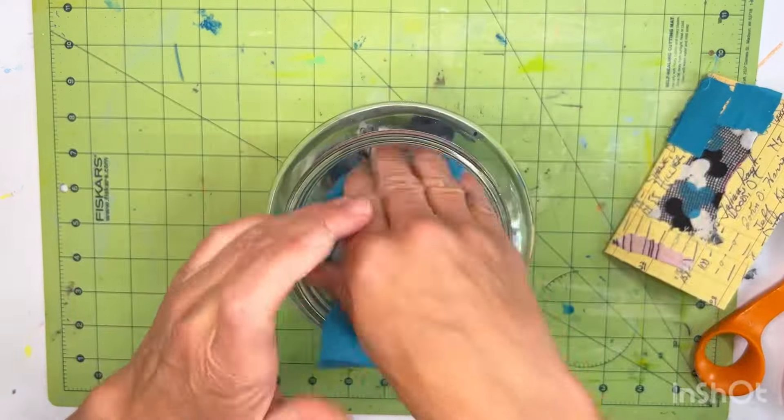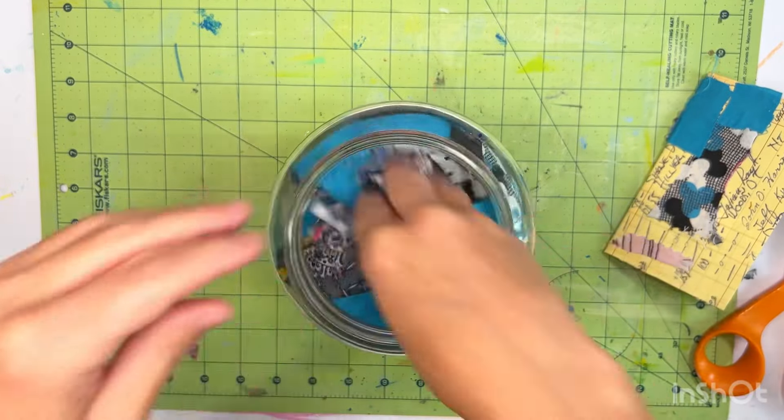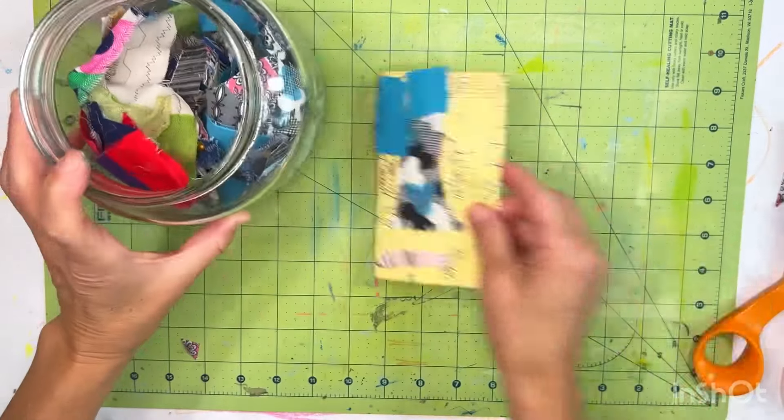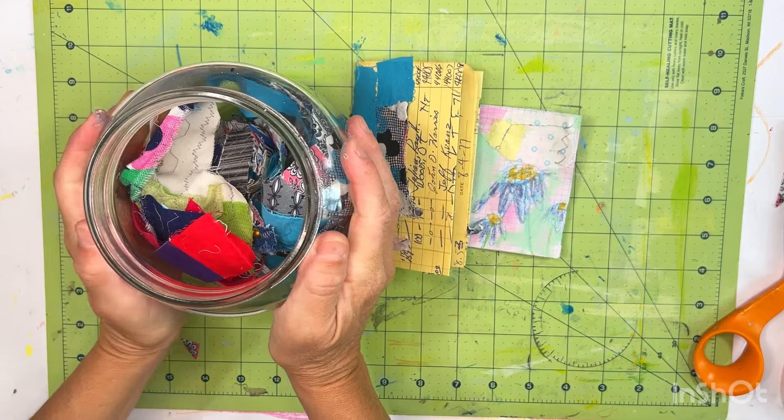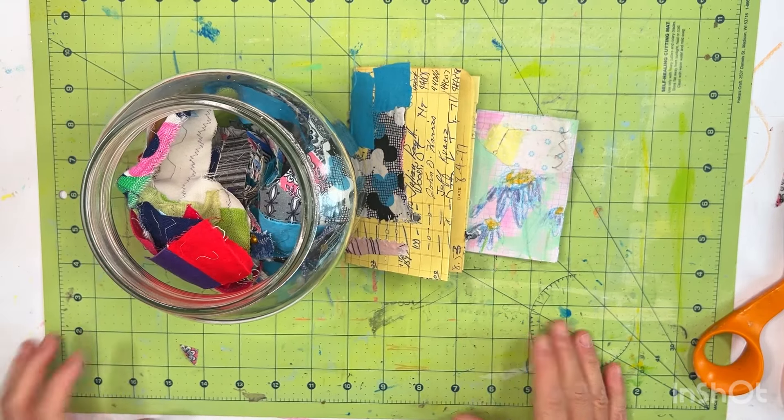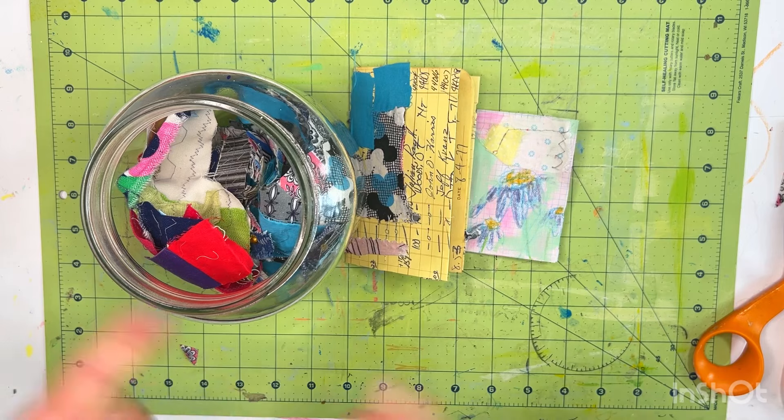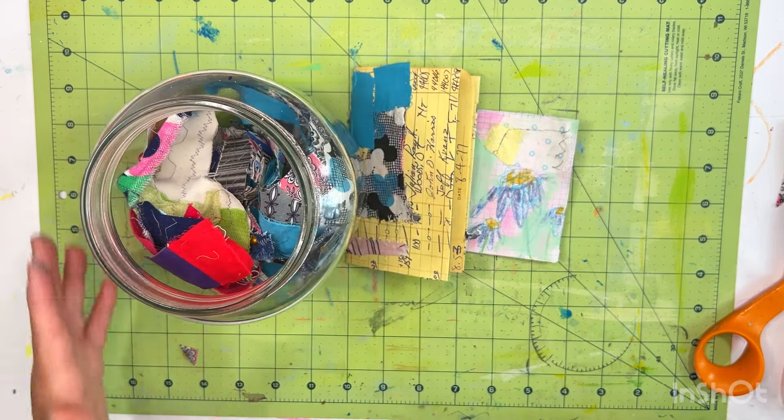So once I'm done I just take all my scraps I stick them in my scrap jar mix them around a little bit and now I have a bunch of fabric snippets that are ready to be put into my art. All right my friends thanks for joining me I hope you are healthy I hope you're happy I hope you do something creative today until next time bye bye.